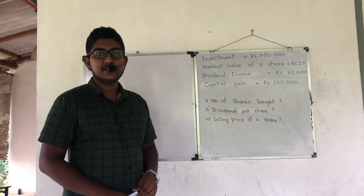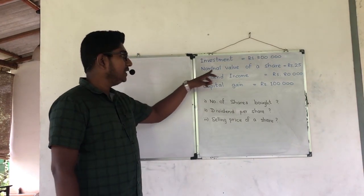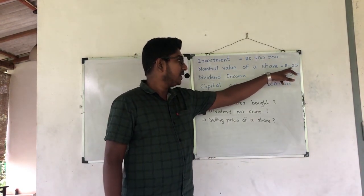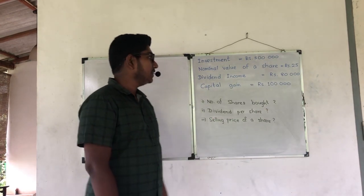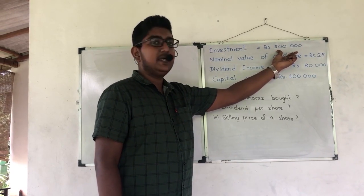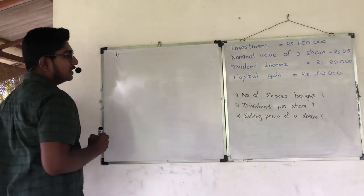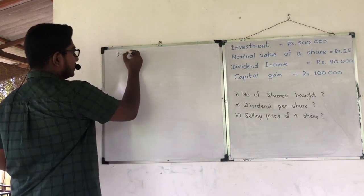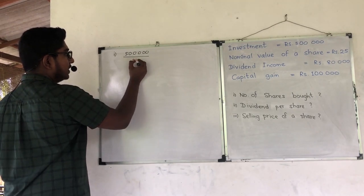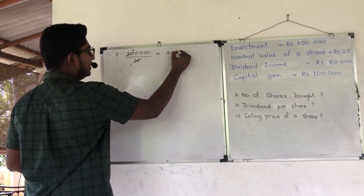This is my second example regarding share market. In this problem, the investment is given as 500,000 rupees and the nominal value of a share is 25 rupees — that means any person can purchase any number of shares where the value per share is 25 rupees. First question, find the number of shares: 500,000 divided by 25 equals 20,000 shares.